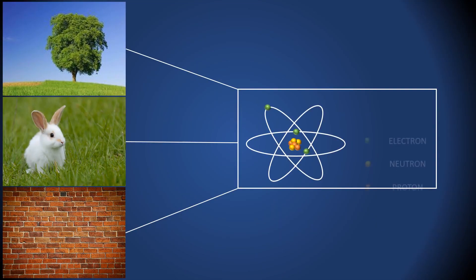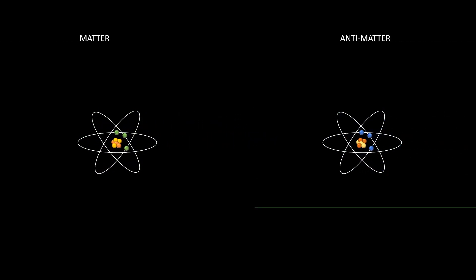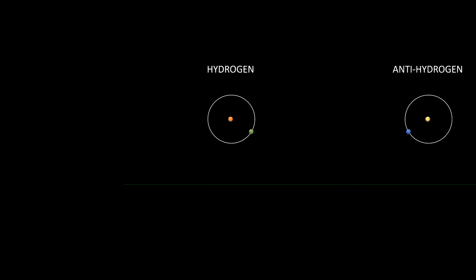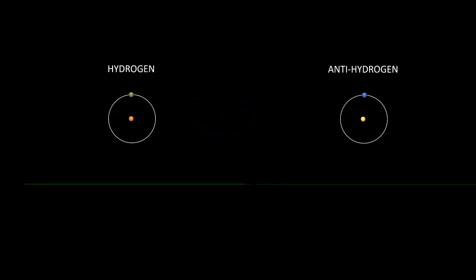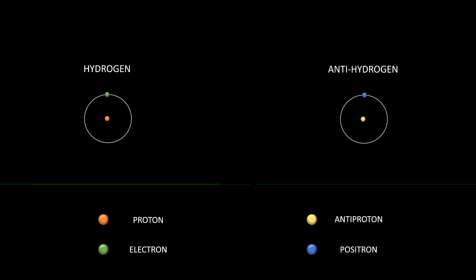Matter is made up of fundamental particles like protons, neutrons, and electrons. Protons are positively charged and heavy particles. Neutrons are chargeless but heavy, and electrons are negatively charged and light particles. Now, antimatter is made of the antiparticles of these fundamental particles. Take hydrogen for example: one electron is orbiting one proton. For an antihydrogen atom, a positron orbits around an antiproton.